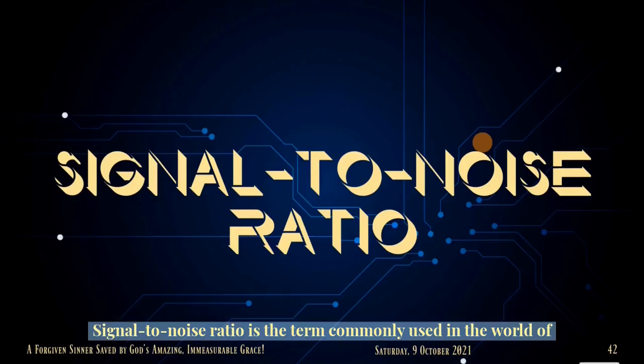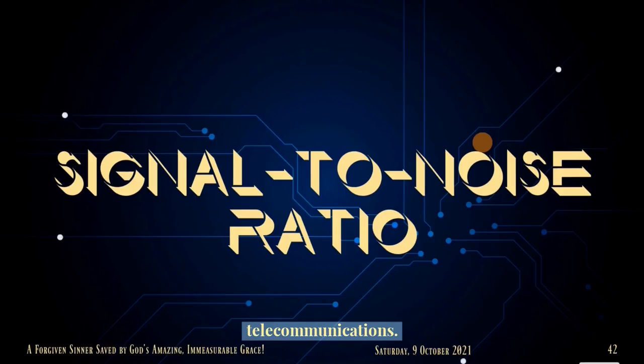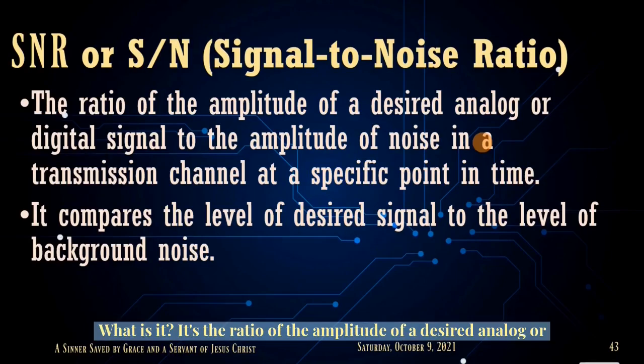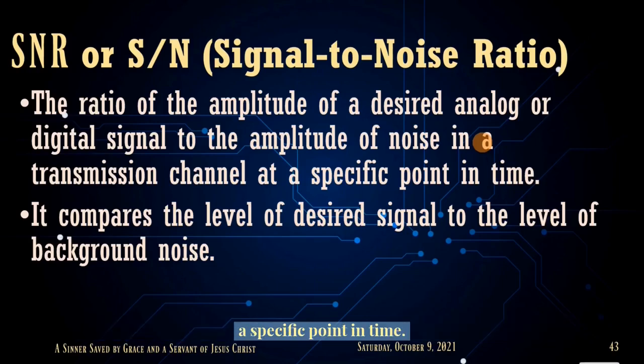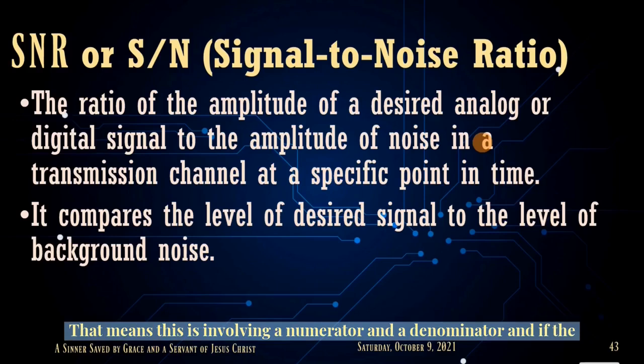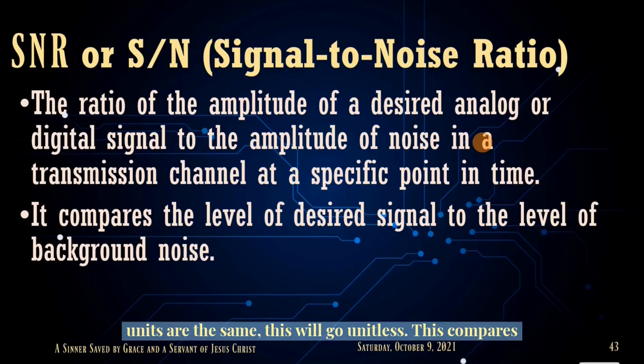Signal-to-noise ratio is a term commonly used in the world of telecommunication. It's the ratio of the amplitude of a desired analog or digital signal to the amplitude of noise in a transmission channel at a specific point in time. This involves a numerator and a denominator, and if the units are the same, it will be unitless. It compares the level of desired signal to the level of background noise.